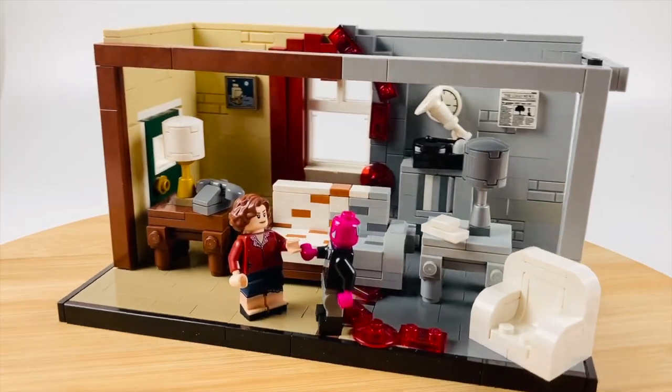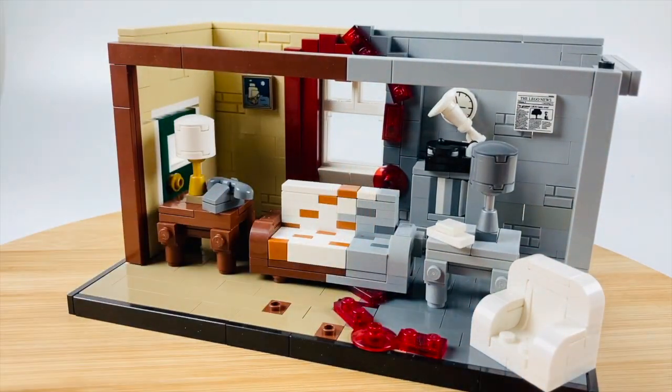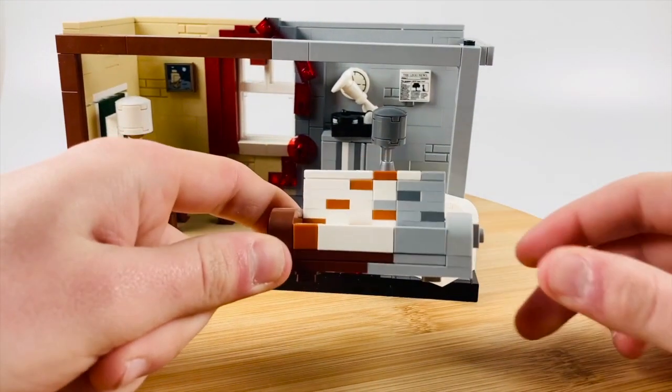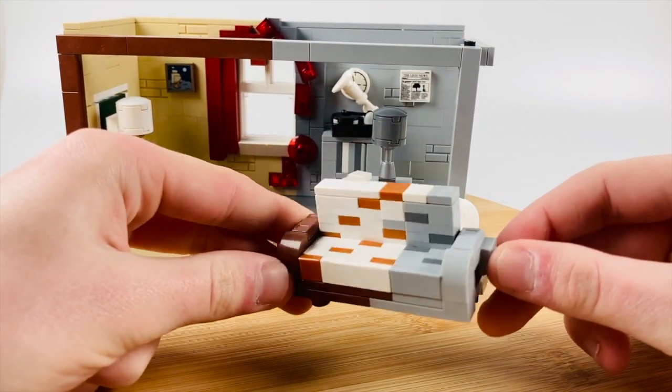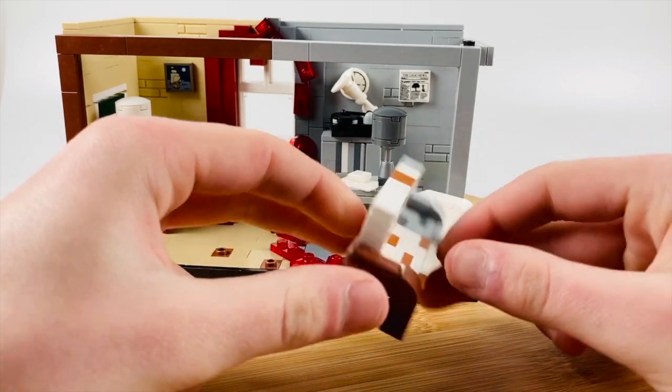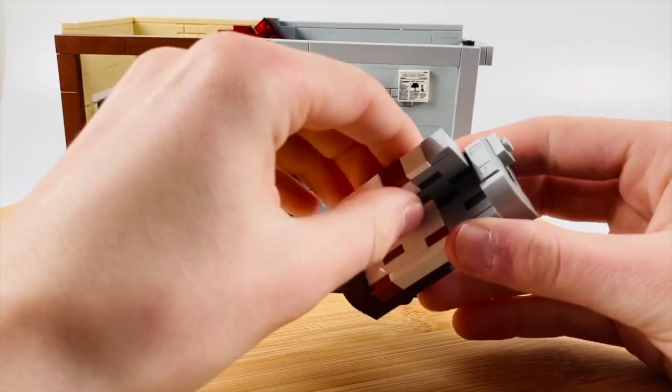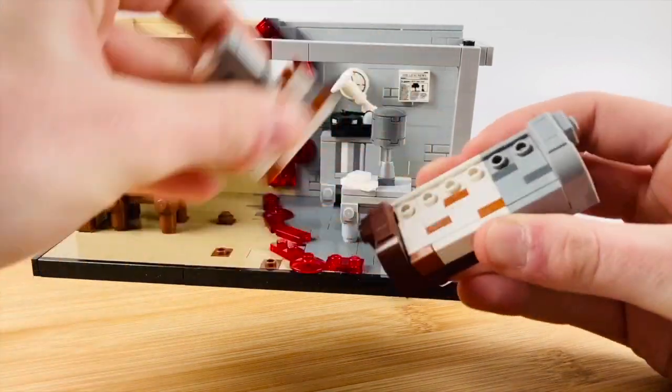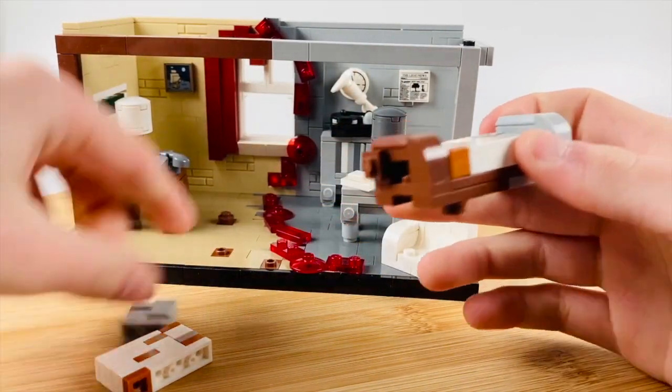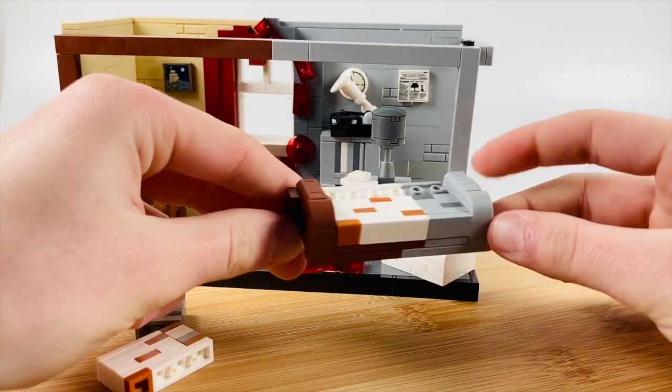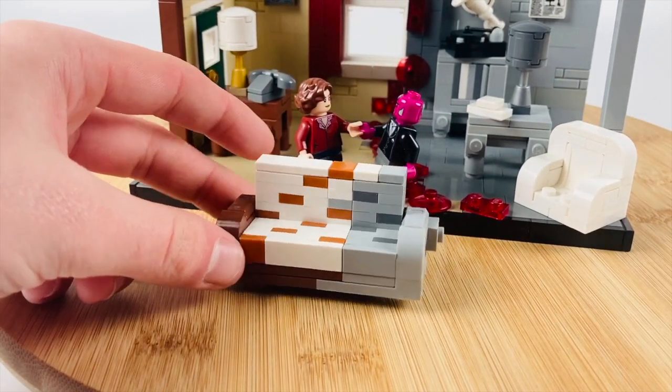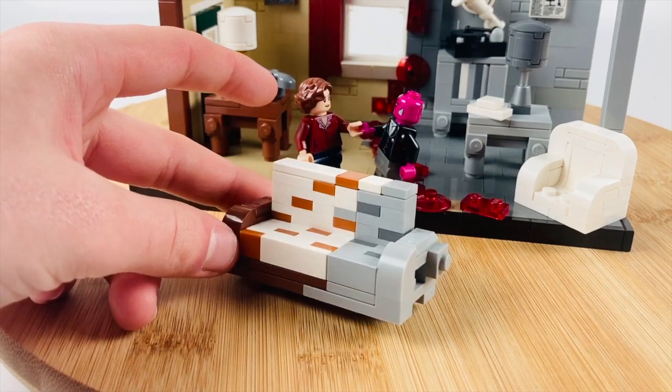If we take the two minifigures off and take a close look at the build, you can see what probably catches your eye is the couch, and that was what I had the most fun doing. In the show, the couch has a floral pattern, and even though I had to minimize the pattern on this one, I did use dark tan 1x1 plates and tiles to give it a bit of design. You can see halfway through the couch it turns into a black and white couch.